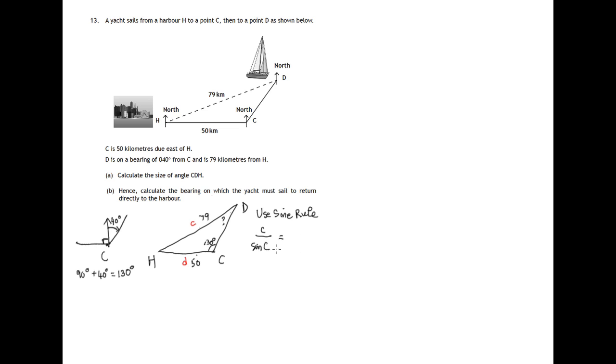C over sine C is equal to D over sine D. And substituting values 79 over sine 130 is equal to 50 over sine D. So there's the substitution being done.